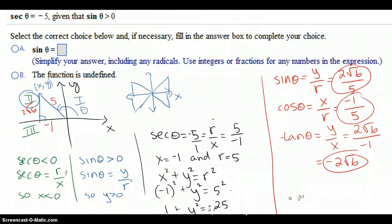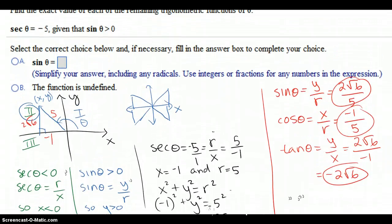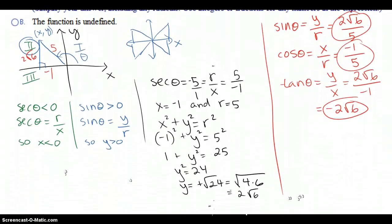Well, we need to find a couple more. The next one, let's do cosecant. Cosecant, I don't know what order they're going to ask you, is r over y. It's 1 over the sine, so we flip it. It's going to be 5 over 2 square root of 6.